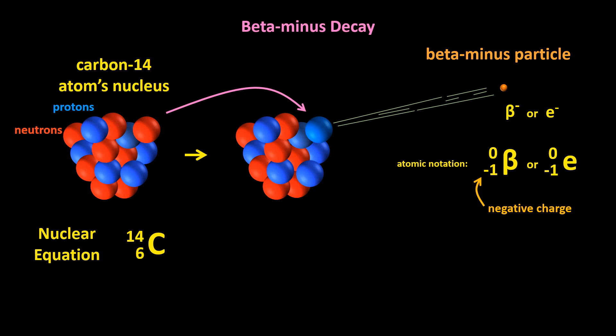Up until now, I've said that the 6 of, say, 14-6-C refers to the number of protons, which is true, but each proton has a charge of 1 plus, so the atomic number of 6 also refers to the number of positive charges in the nucleus. The minus 1, therefore, in 0-minus-1-beta, refers to the fact that the particle has a charge of minus 1. The zero means that the combined number of protons and neutrons is zero.